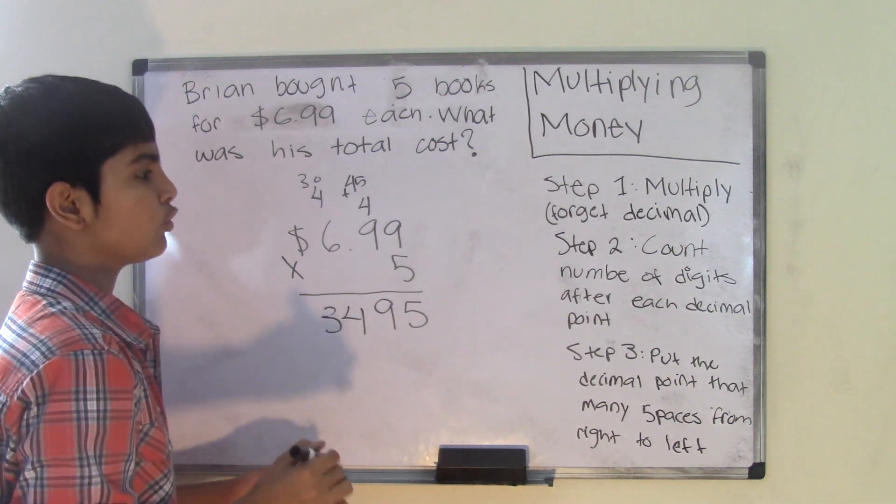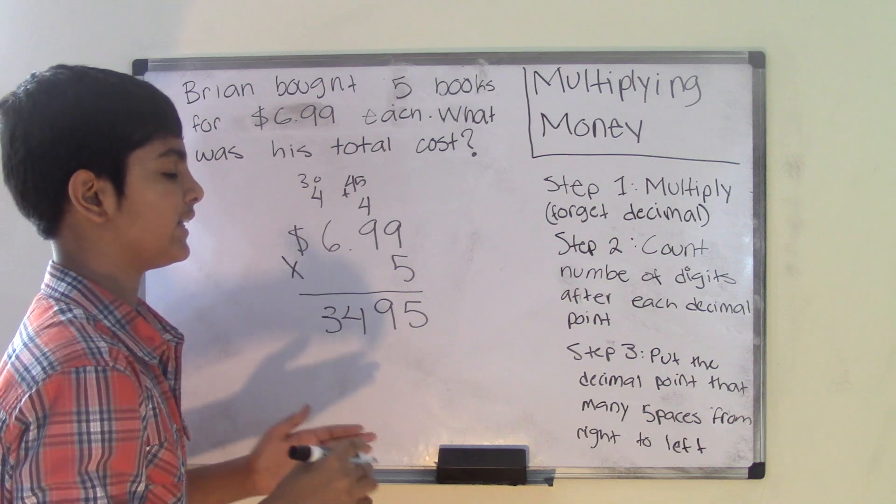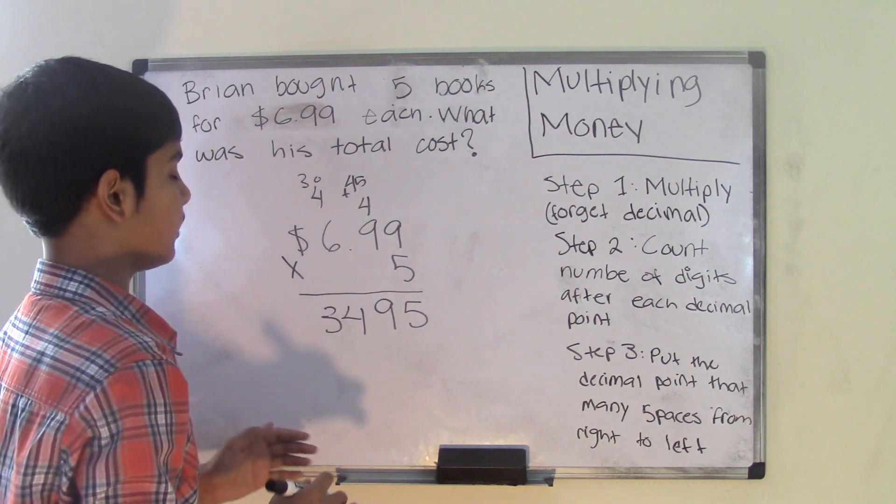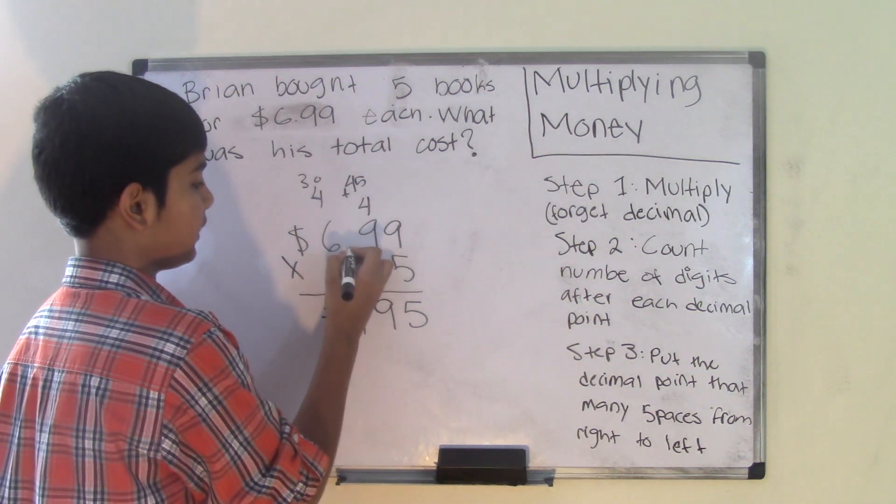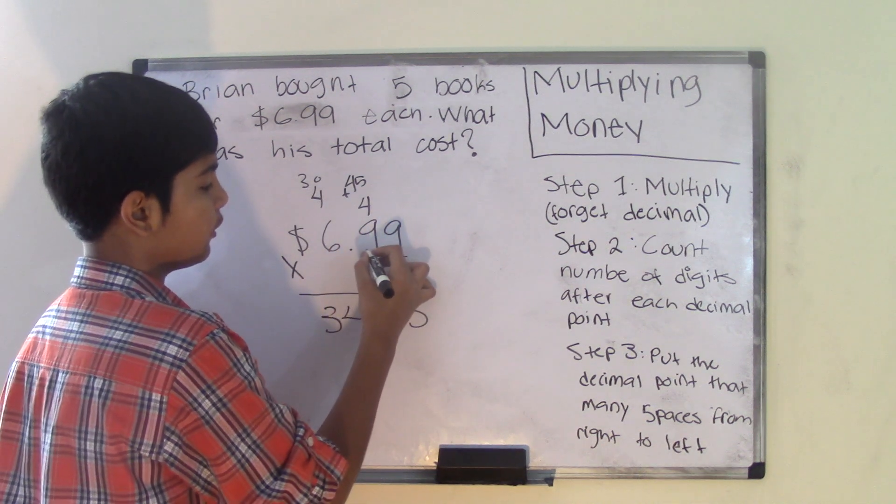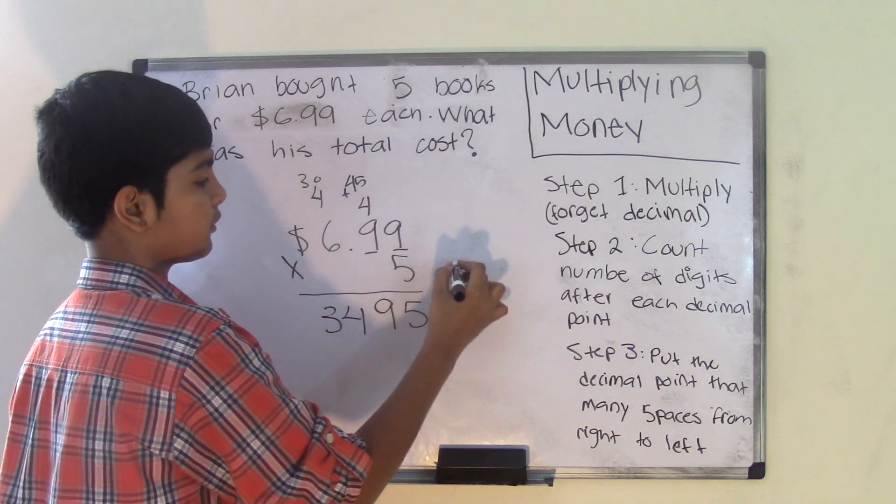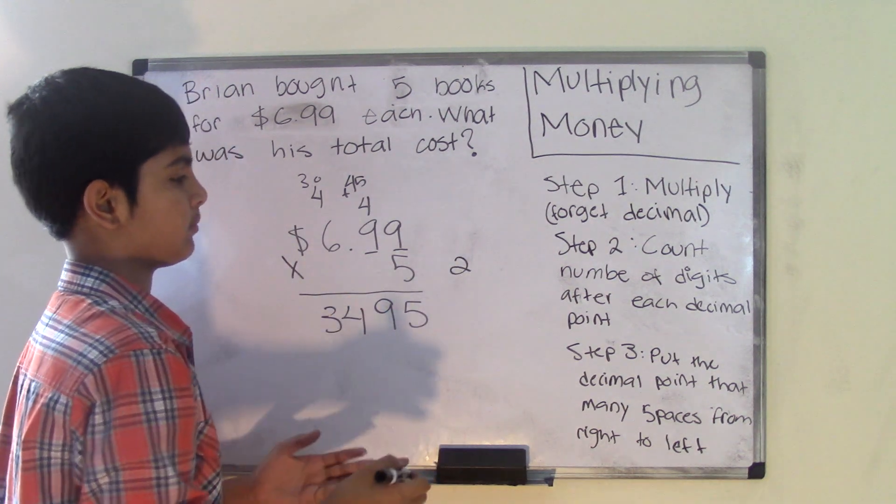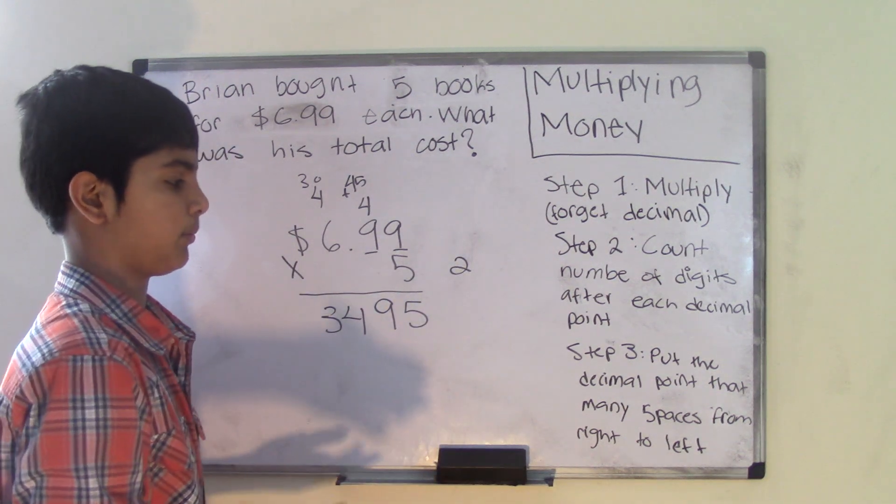Now step number two is count the number of digits after each decimal point. So there's one decimal point. I have to count the number of digits after this decimal point which are one and two. So we have two spaces after the decimal point. We have two digits after the decimal point.